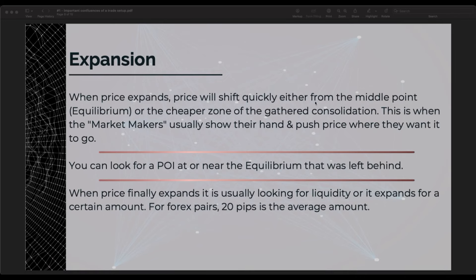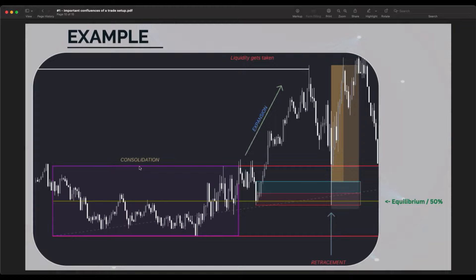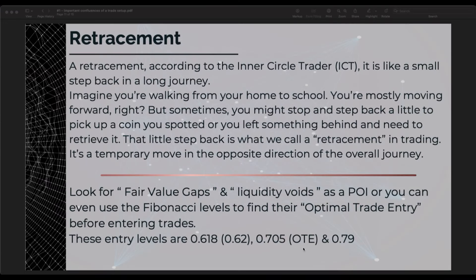When price expands, it will shift quickly either from the middle point — the equilibrium — or the cheaper zone of the gathered consolidation. This is when market makers usually show their hand and push price where they want it to go. You can look for a point of interest at or near the equilibrium that was left behind. When price finally expands it is usually looking for liquidity — for forex pairs, 20 pips is the average amount. Price was consolidating, breaks out, takes out previously left-behind liquidity, retraces into the equilibrium or an order block, then continues back up, creating a higher low.